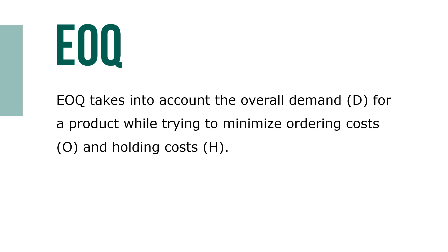Economic order quantity, or EOQ, is a system of formulas that helps determine how much and how often inventory should be ordered. EOQ takes into account the overall demand (D) for a product while trying to minimize and optimize ordering costs (O) and holding costs (H).